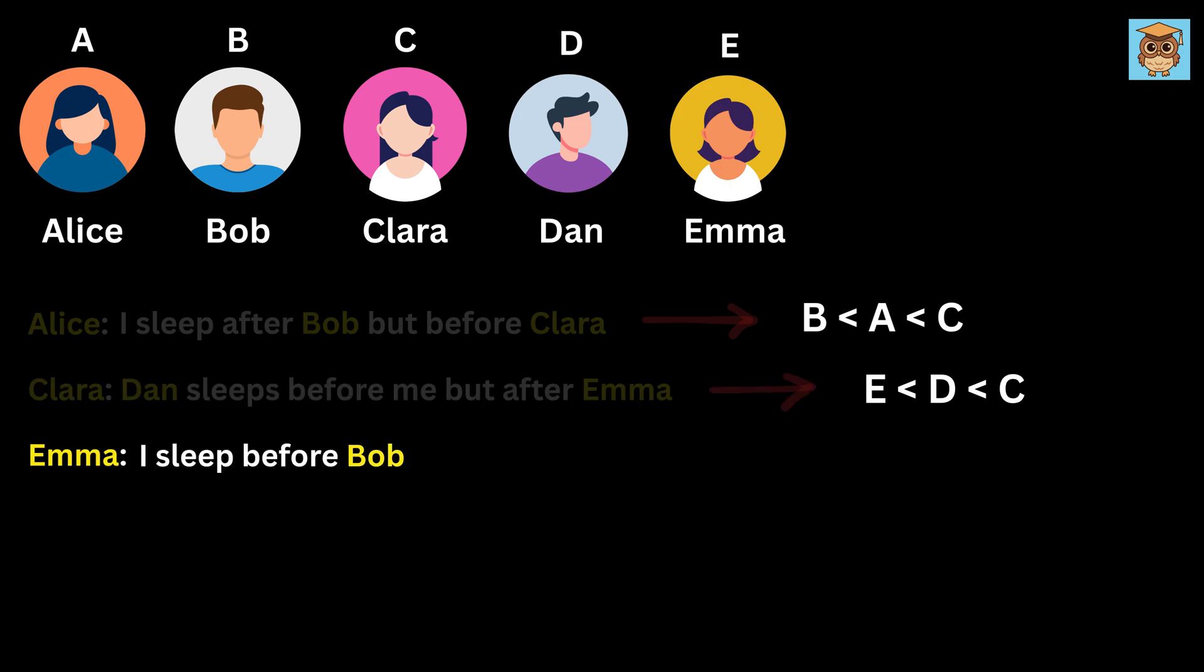Emma says, I sleep before Bob. This means the order is E, and then B.